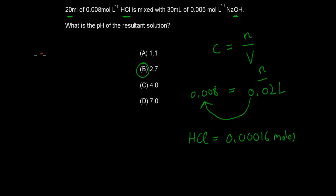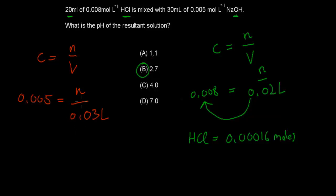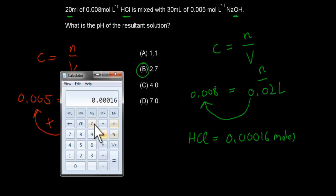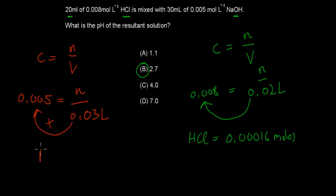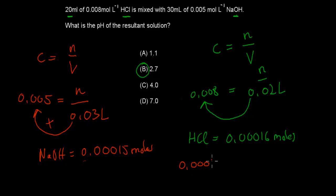For sodium hydroxide: concentration = 0.005 mol/L, volume = 0.03 L, so n(NaOH) = 0.005 × 0.03 = 0.0015 mol. The NaOH neutralizes an equal amount of HCl: 0.0016 − 0.0015 = 0.0001 mol of HCl remaining.